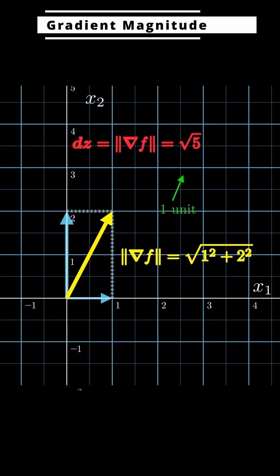It's not that the whole plane is tilted by the square root of 5. It's that in this special direction, f increases at the square root of 5 per unit step.